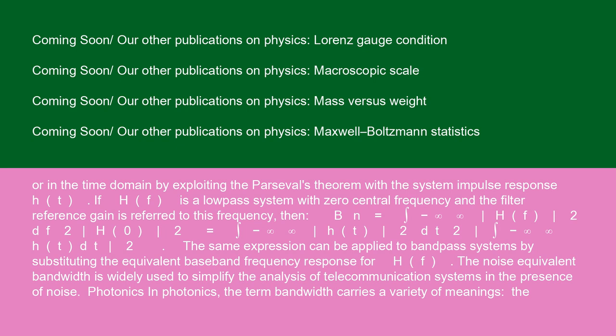If H of F is a low-pass system with zero central frequency, and the filter reference gain is referred to this frequency, then B N equals integral minus infinity to infinity of H of F squared dF over 2 times H of 0 squared equals integral minus infinity to infinity of H of T squared dT over 2 times the square of integral minus infinity to infinity of H of T dT. The same expression can be applied to bandpass systems by substituting the equivalent baseband frequency response for H of F. The noise equivalent bandwidth is widely used to simplify the analysis of telecommunication systems in the presence of noise.